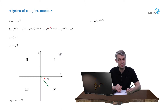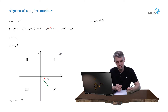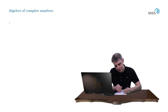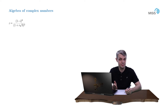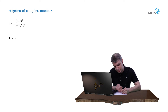Now our next example. The assignment is the same: find the modulus and the argument of the following complex number. This time the complex number is the ratio of (1 − i)^6 divided by (1 + i√3)^5. First of all, let's work the complex number in the numerator. We already know its exponential representation — it's simply √2 · e^(−iπ/4).